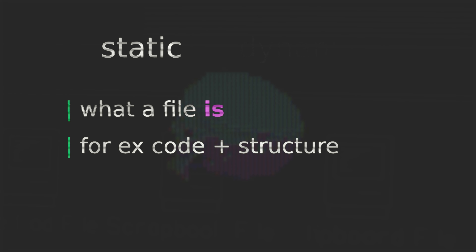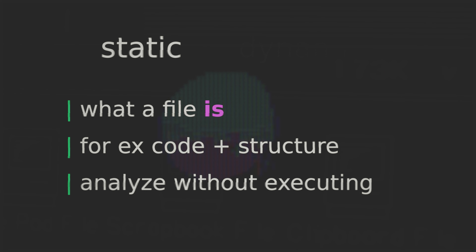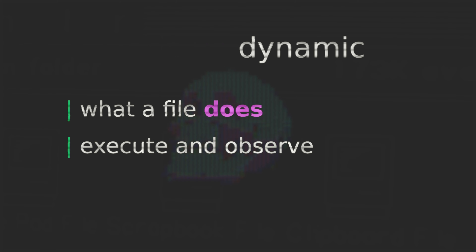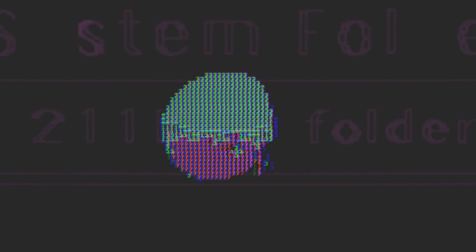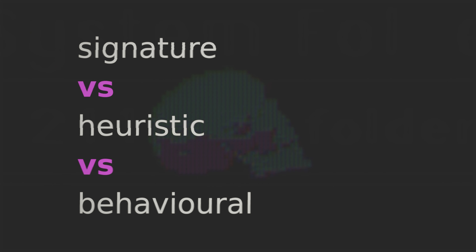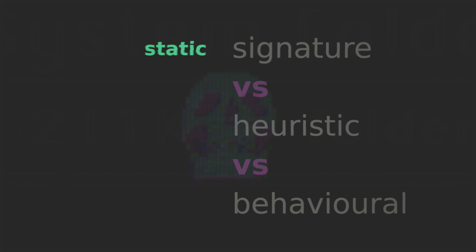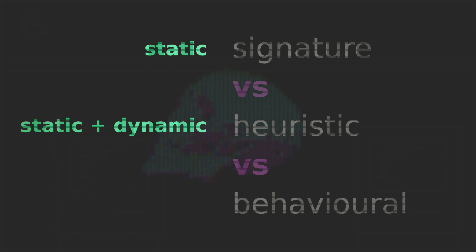Static versus dynamic analysis is really more of a classification than an explicit type of detection. With static analysis it's all about what a file is — the code and structure — and we call it static because we analyze the file without ever executing it. With dynamic analysis it's about what a file does: we execute the file, and depending on the type this could be done in a sandbox, an isolated virtual machine, or in the actual live environment. In general, it's typically easier to foil static analysis versus dynamic analysis.